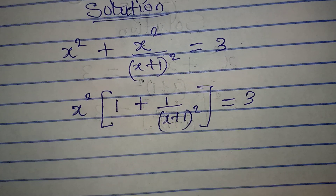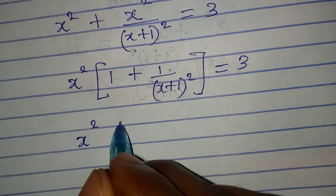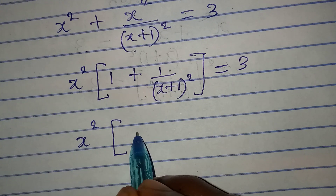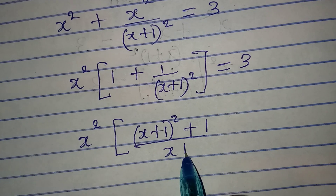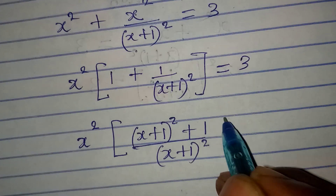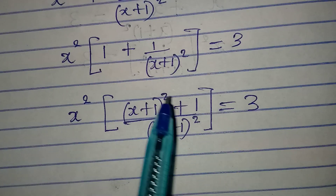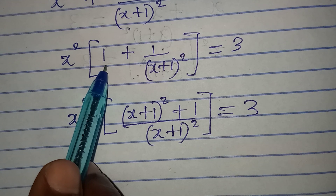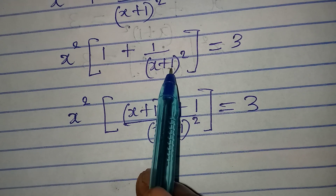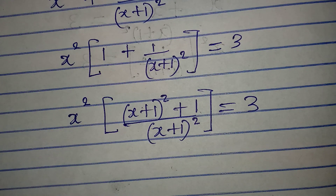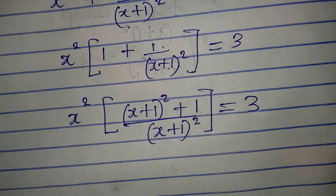Now the next thing I'm going to do is deal with what I have in the bracket. So I will have x squared, and in brackets I'm going to have x plus one squared plus one, over x plus one, both squared, everything equal to three. What I did here is find the LCM. The LCM divided by x plus one squared gives us one, and the LCM is x plus one squared.